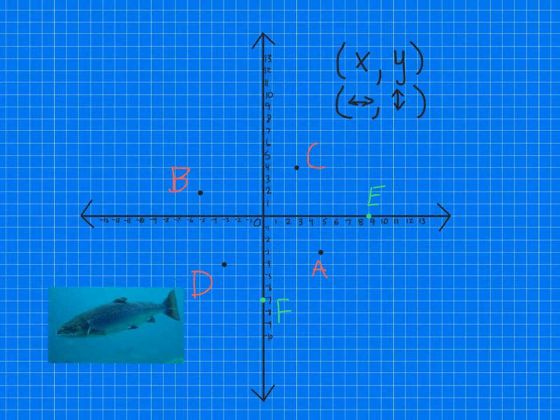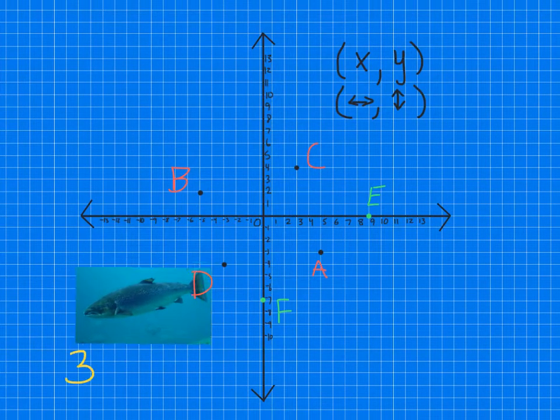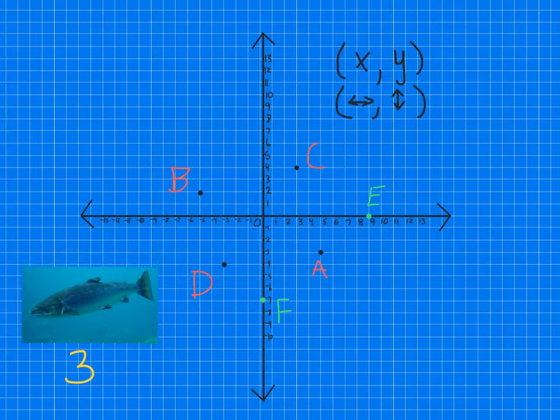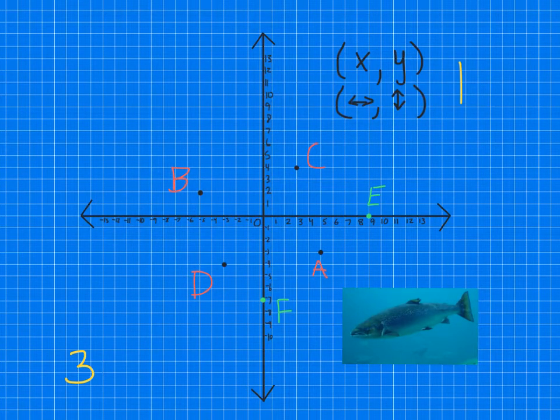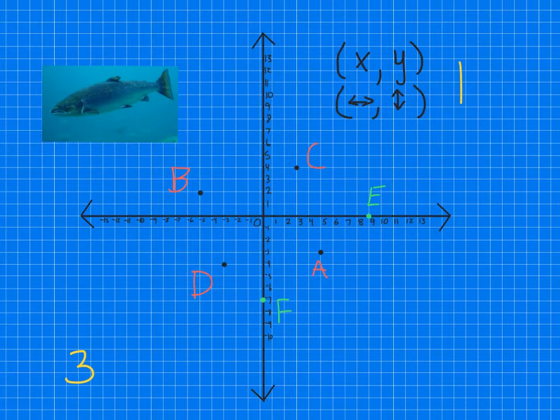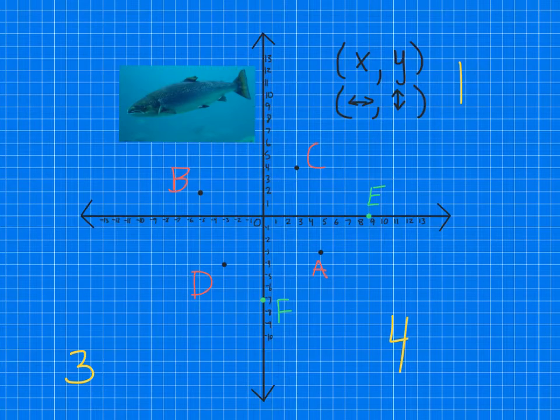Alright, you tell me what quadrant he's in right now. Okay, so this was quadrant three. Alright, and let's move him now over here. What quadrant is he in now? Alright, he is in quadrant one. And how about now? He is in quadrant four. And how about now? That's right, he is in quadrant two. So I didn't use Roman numerals there, but you get the picture.